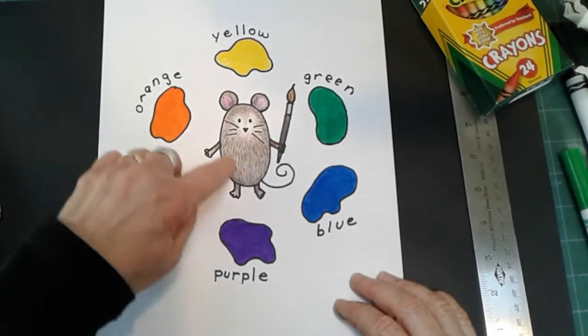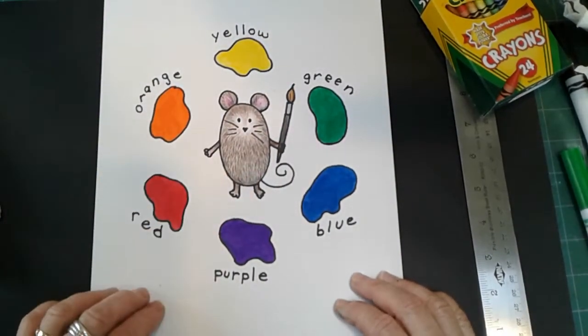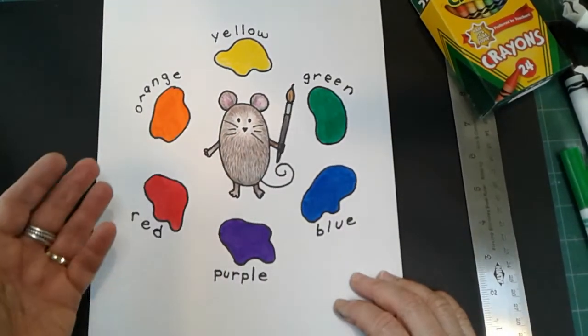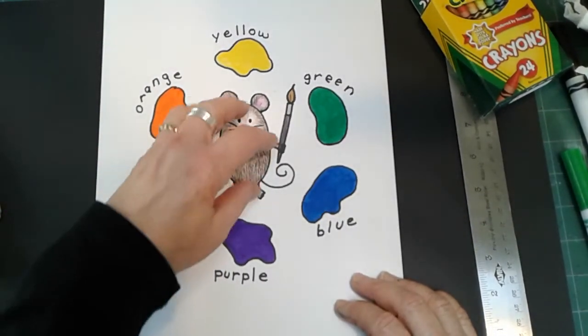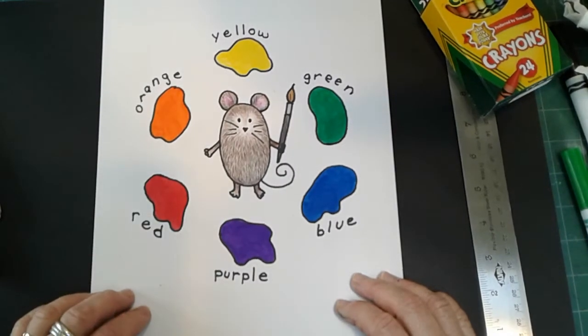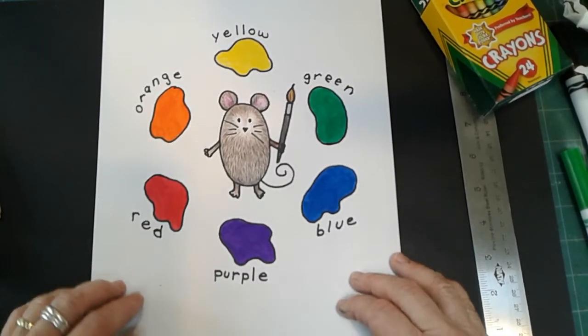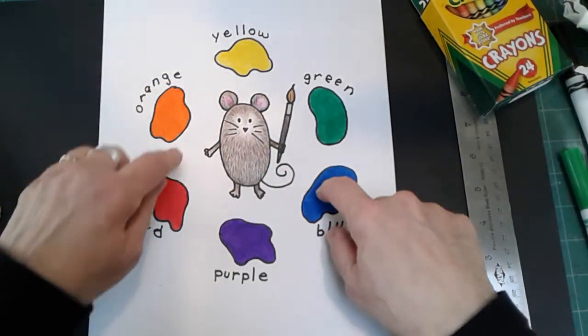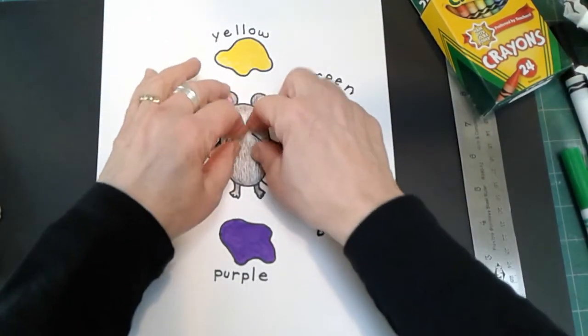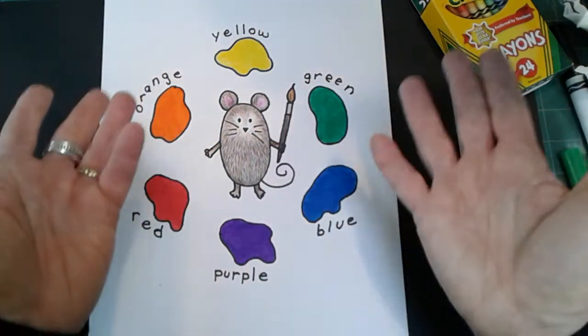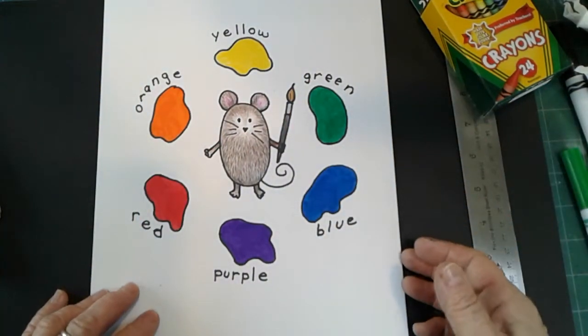I have my little mouse in the center, but if you notice, this little mouse is not white. He is a brownish gray, and I made him a brownish gray because that's what happens when you mix the three primary colors together, you get a brownish gray. So that's why I stuck him in the middle that way.